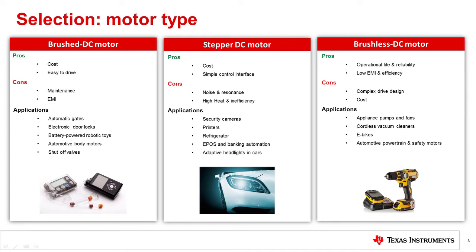Brushless DC motors, or BLDC motors, have benefits that include a long lifetime and reliability due to the lack of contact between stator and rotor. Additionally, BLDC motors are the most efficient and can achieve a smooth drive. Many applications that historically used brushed DC motors have switched over to BLDC motors due to these benefits. The cons include two crucial disadvantages: they require a complex drive design, and this drive circuitry is more expensive than the other motor types.